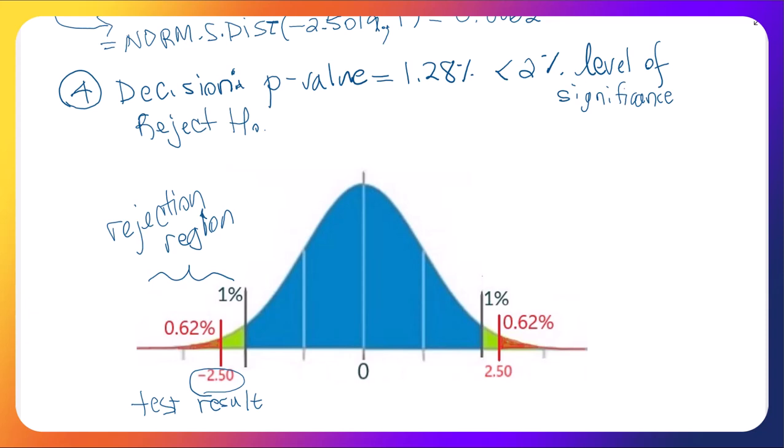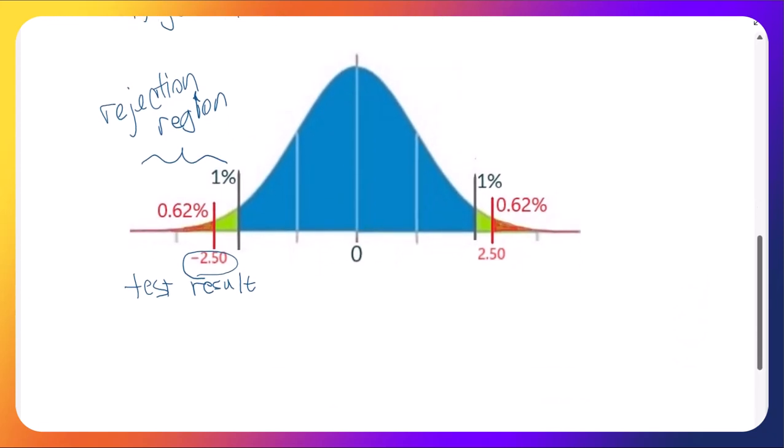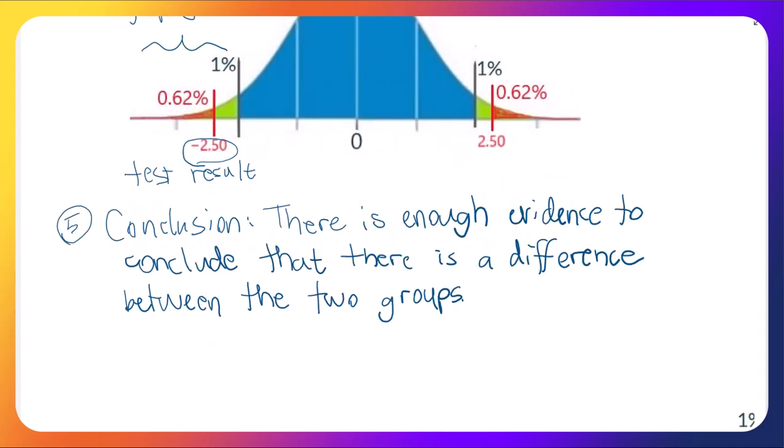Finally, conclusion. What we're really trying to determine is if there is a difference between the two groups. Our conclusion is that yes, there is because we rejected H0. There is enough evidence to conclude that there is a difference between the two groups in the percentage of support for the pipeline. That concludes this video. Thanks for watching.